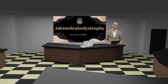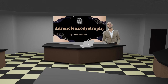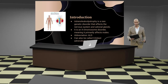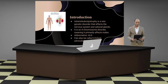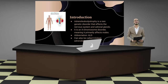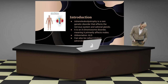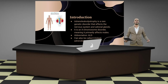Welcome class. Today we will be learning about adrenoleukodystrophy. Adrenoleukodystrophy is a rare genetic disorder that affects the nervous system and adrenal glands. It is an X chromosome disorder, meaning it primarily affects males.